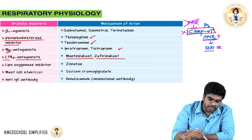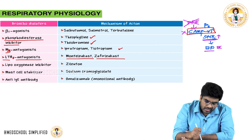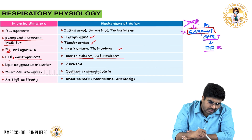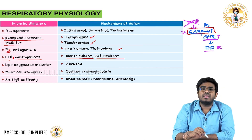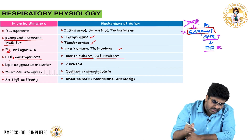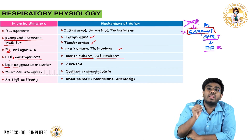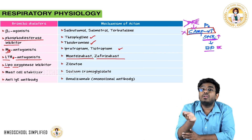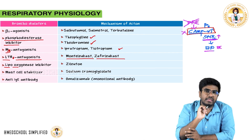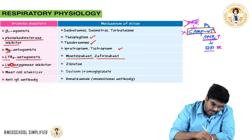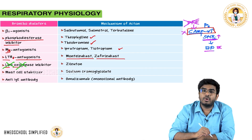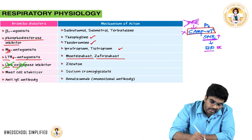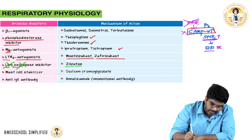Lipoxygenase inhibitors like zileuton can also be used. Lipoxygenase is the enzyme needed for leukotriene production — cyclooxygenase is for prostaglandins, but lipoxygenase is for leukotrienes. When you inhibit lipoxygenase, leukotriene production stops and the bronchus dilates.